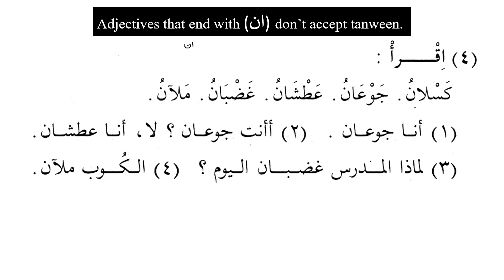Here is more vocabulary: kaslanu means lazy, jaw'anu means hungry, 'atshanu means thirsty, ghadbanu means angry, and mal'anu means full. All of them end with alif and nun, and that is why all of them are mamnu' mina al-sarf. So you say 'ana jaw'anu' — I am hungry. Are you hungry? No, I am thirsty.